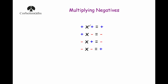If the two signs are the same — so positive times positive, or negative times negative — the answer will be positive. And if you're multiplying one negative and one positive together, the answer will always be negative. So if you've got one of each, the answer will be negative.